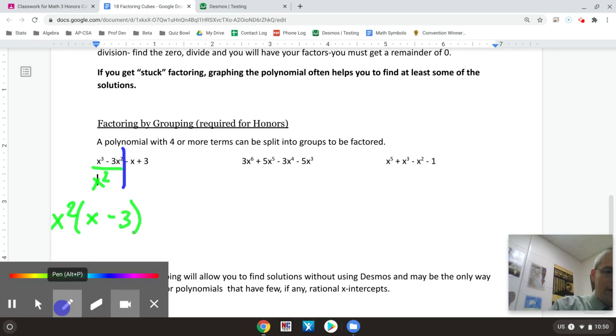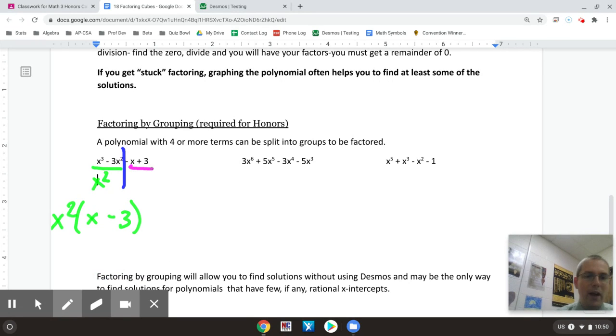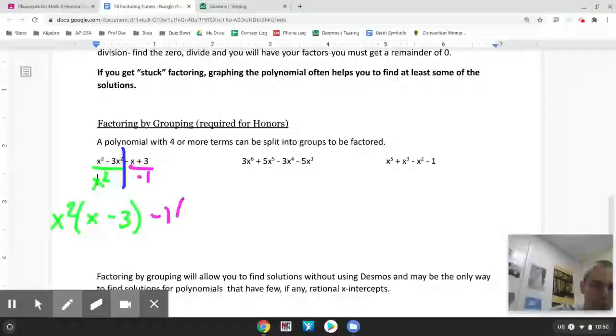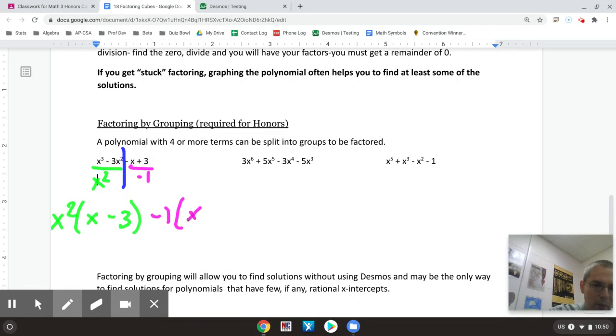Then I say, well, what divides out of the second half? The second half doesn't really have anything to come out. But since it starts with a minus, remember, we don't like a minus in front. So go ahead and divide out a minus one. And that gives me a minus one, and I'll change it to an x minus three.